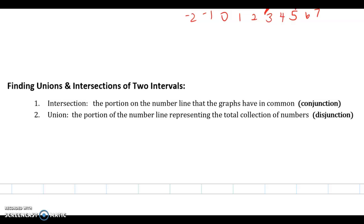For vocabulary, we're still talking about intersection and union, but there are other names for these as well. Intersection is the same concept — on a graph you're finding what the intervals have in common — and this can be called a conjunction. For unions, you're bringing everything together as the total collection of numbers, and this is called a disjunction.